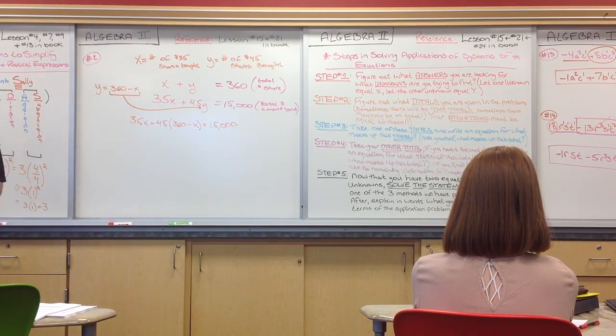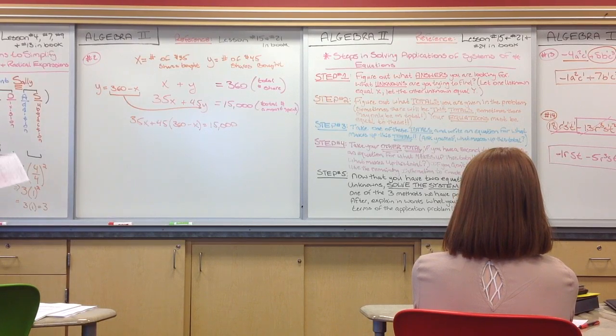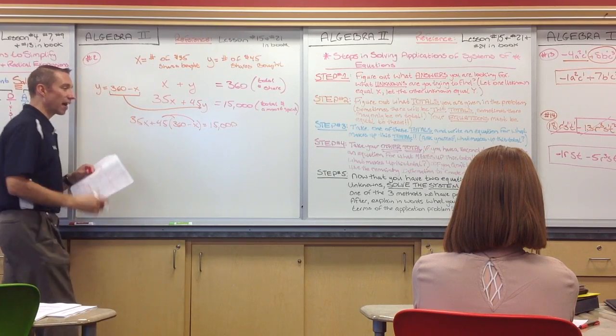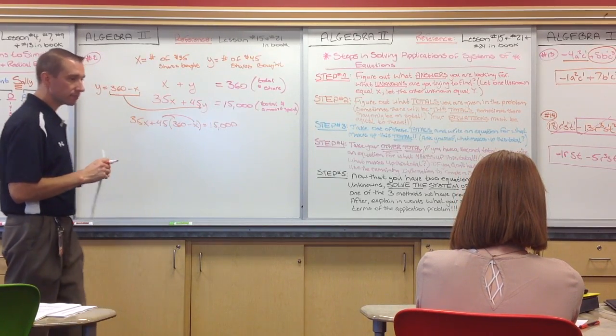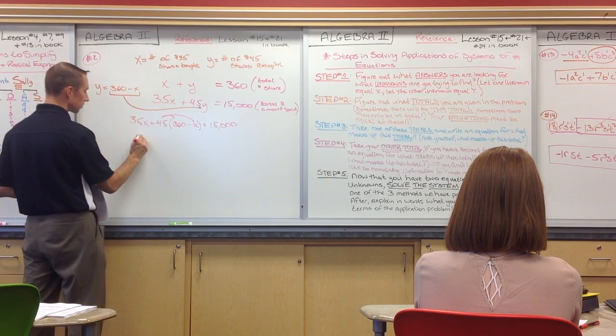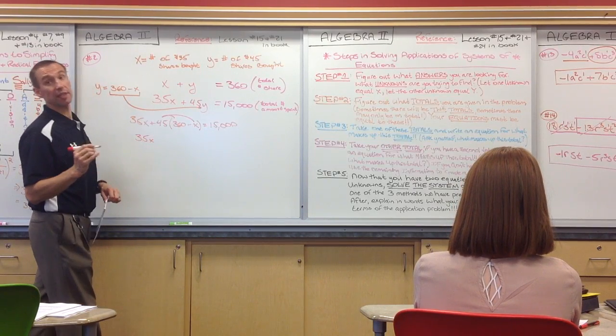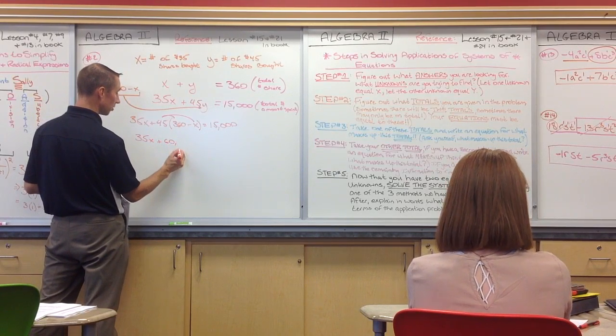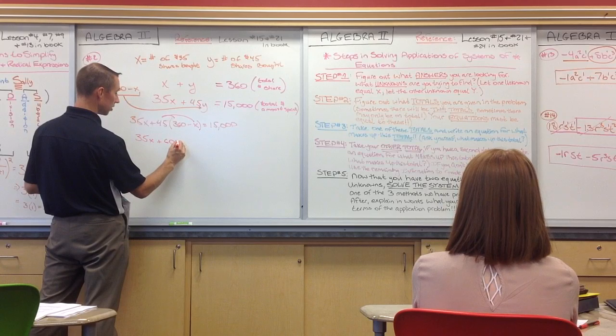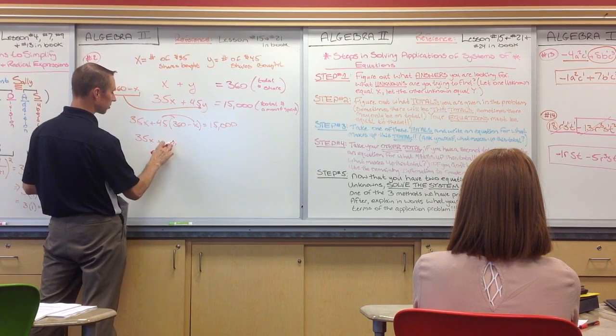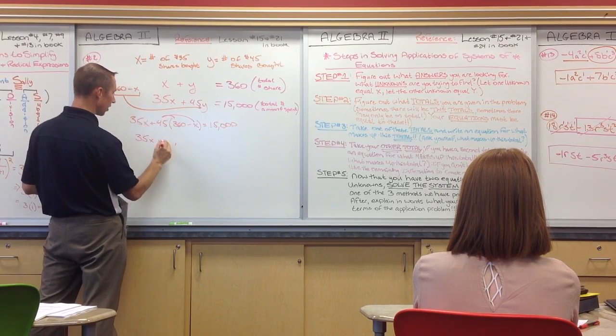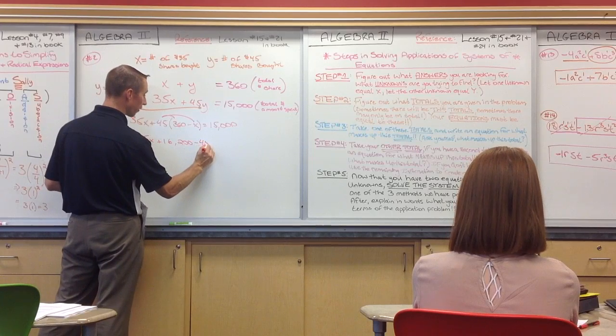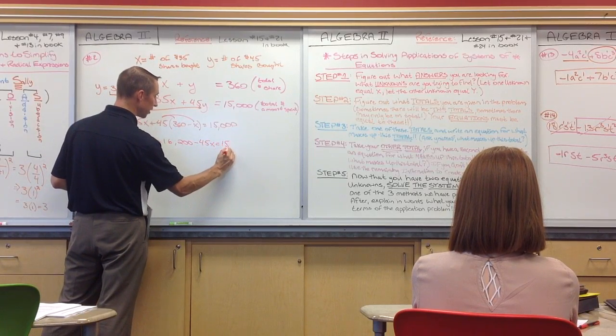And we finish solving for X now. We've got to distribute to get rid of these parentheses. What is 45 times 360? 16,200. So, we have plus 16,200 and then distribute here, we get negative 45X is equal to 15,000.